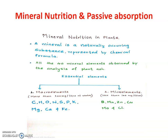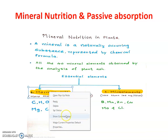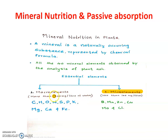Plants not only require carbon dioxide and water for preparation of food material in photosynthesis, but along with carbon dioxide and water, plants require minerals for preparation of food. So minerals are categorized into two — macro elements and micro elements.